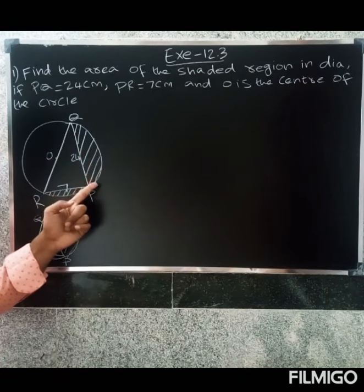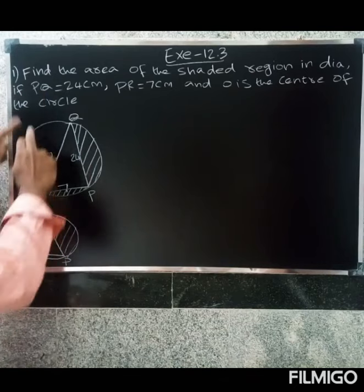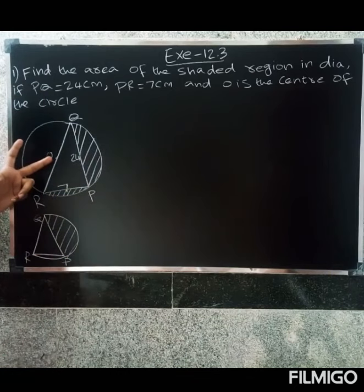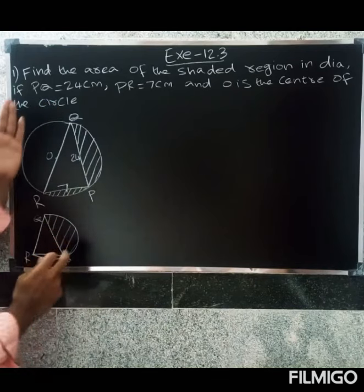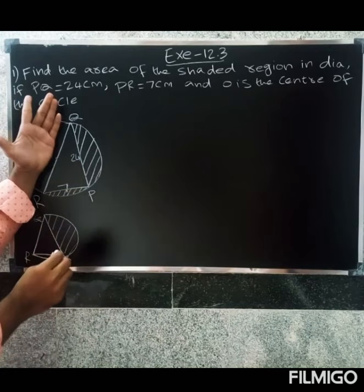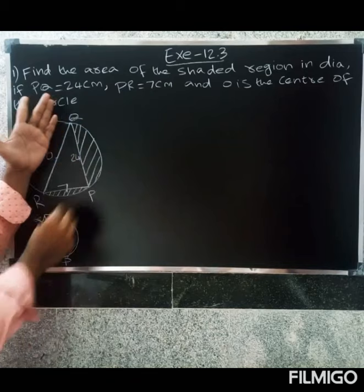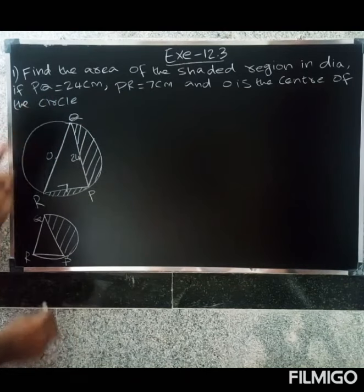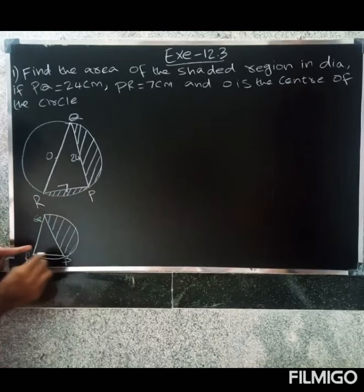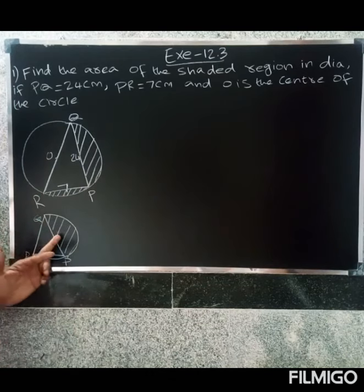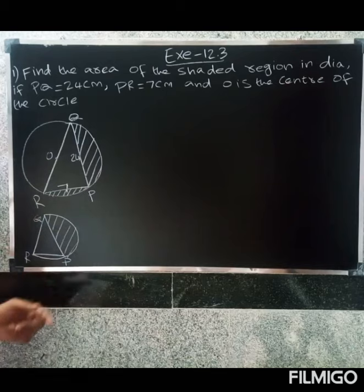Looking at the shaded region - this is the total circle with O as the center. This is the semicircle. In the semicircle, the triangle minus gives us the shaded region.